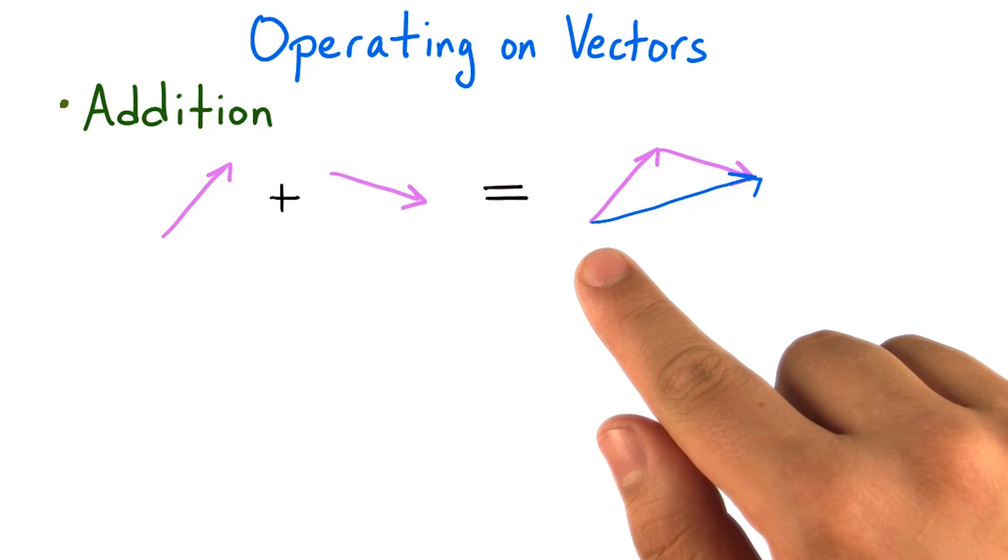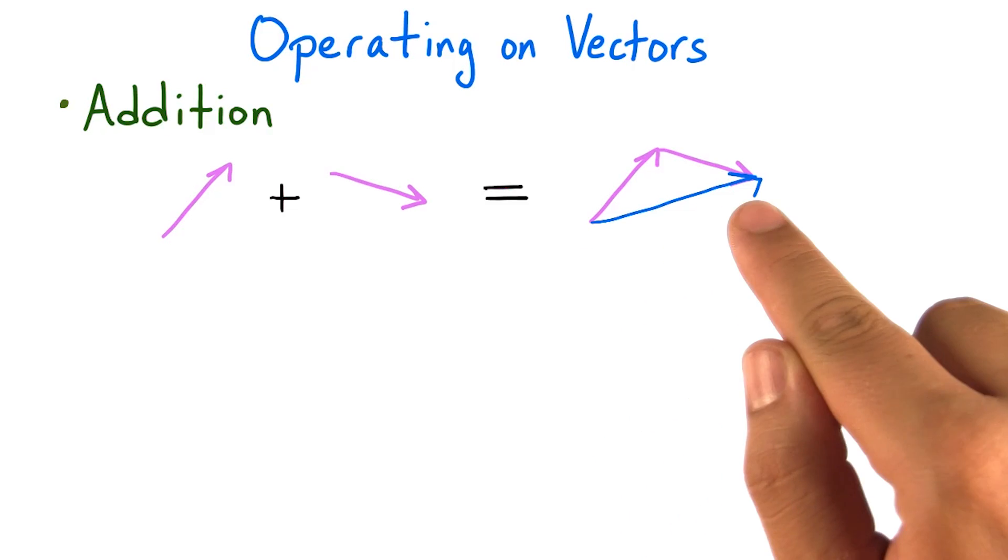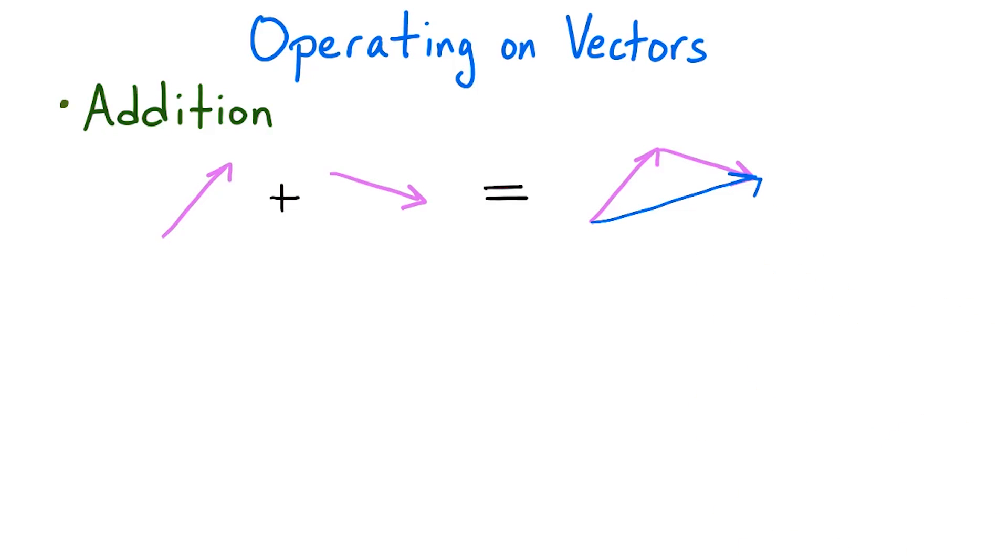The arrow formed starting at the tail of the first arrow and ending at the head of the second arrow gives the overall total amount of change by the two vectors. This new arrow is the sum of the first two vectors.